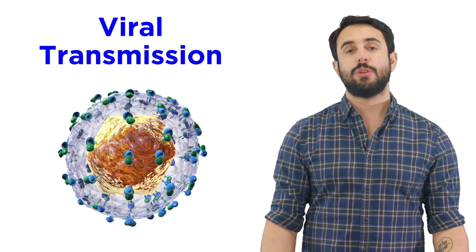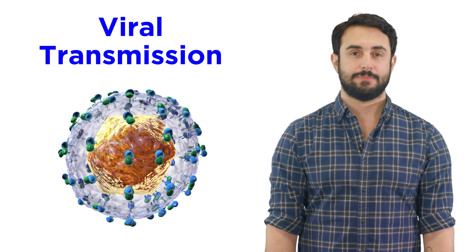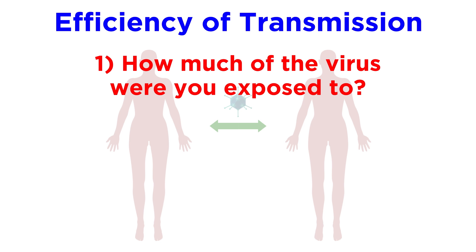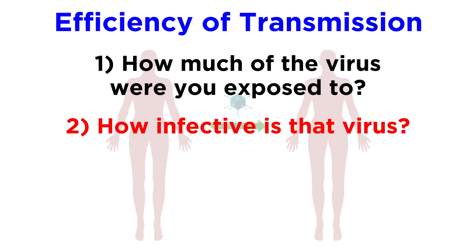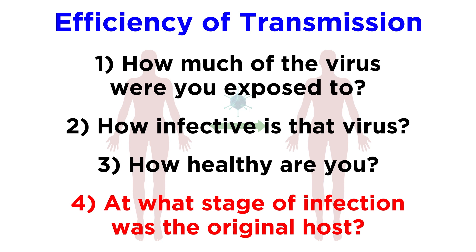Let's now get a closer look at precisely how viruses are transmitted. The efficiency of transmission depends on a few things: how much of the virus were you exposed to, how infective is that virus, how healthy are you, and if you encounter someone that is sick with a virus, at what stage of infection did you encounter them? All of these details are relevant.